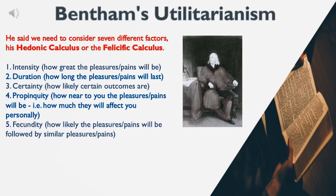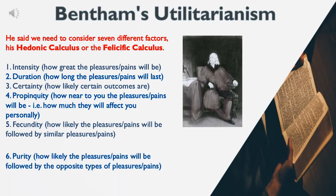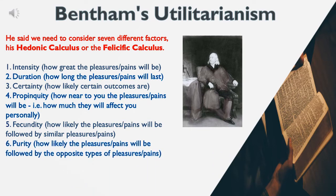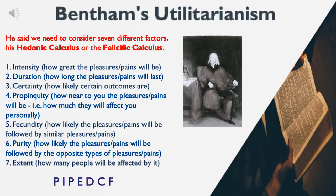5. Fecundity — how likely the pleasures or pains will be followed by similar pleasures or pains. 6. Purity — how likely the pleasures or pains will be followed by the opposite types of pleasures or pains. 7. Extent — how many people will be affected by it.